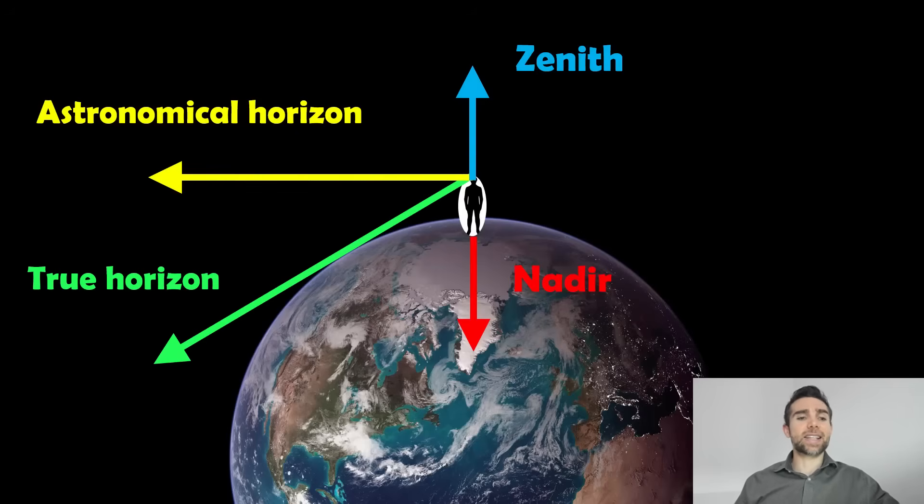The nadir is essentially the opposite of the zenith. It's directly below us, like 180 degrees further around than the zenith. So it's directly below us, underneath. And you've still got the astronomical horizon. And again, as the Earth moves, they all stay relative to us.